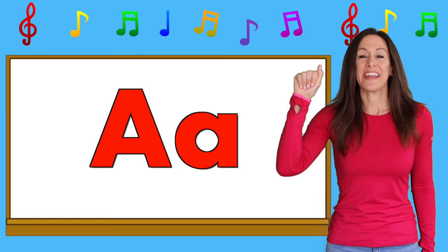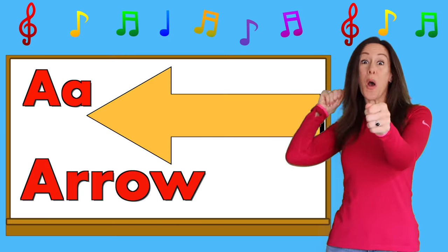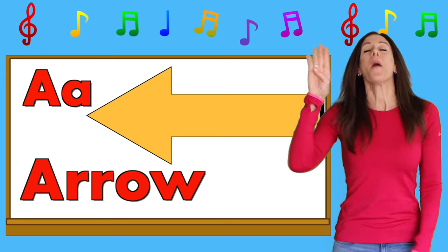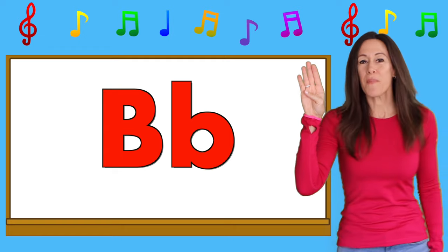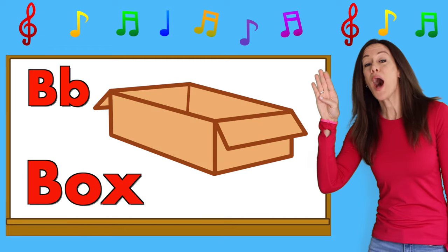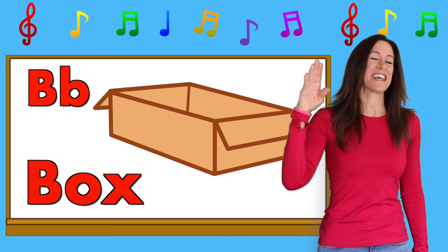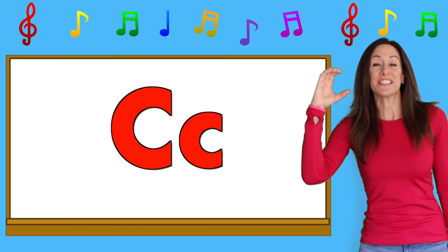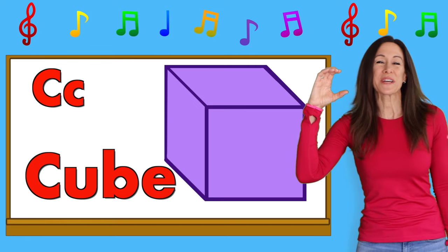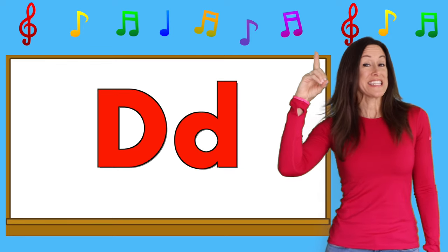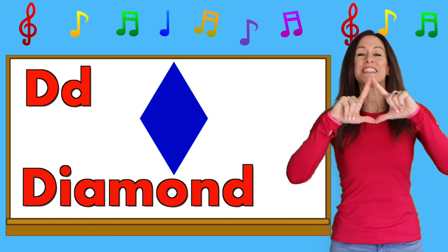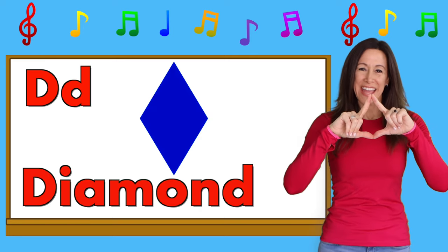A is for Arrow. B is for Box. C is for Cube. D is for Diamond.